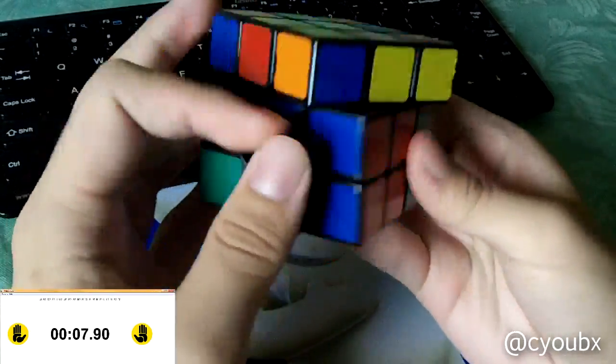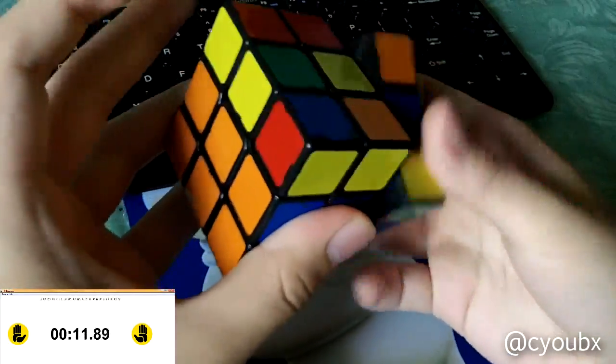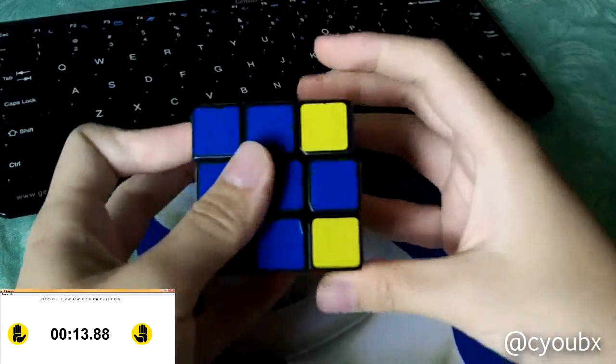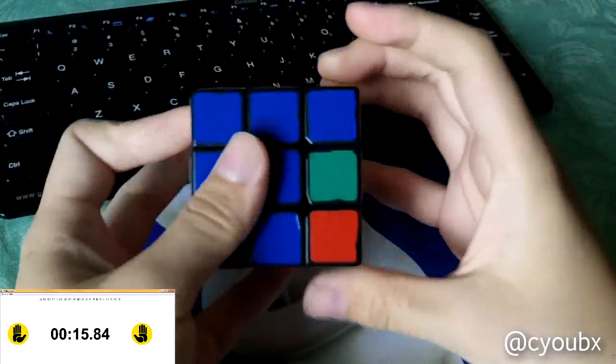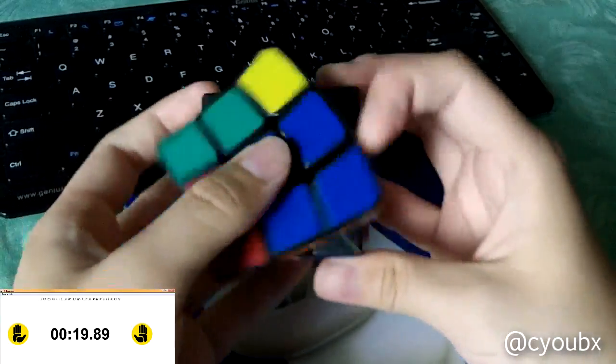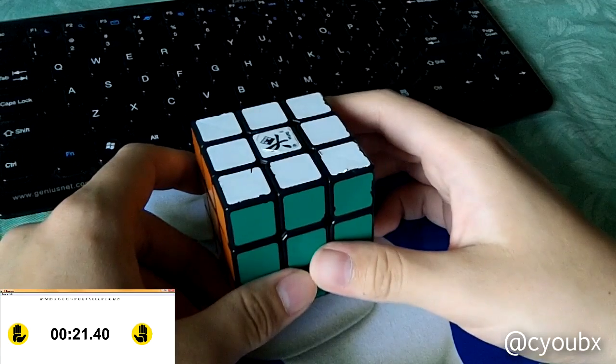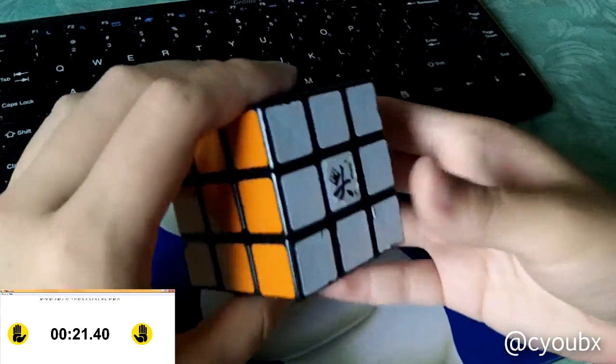One way to make look-ahead easier is to learn what each F2L case, solution, or algorithm does to the other pieces. This way, you'll know what case you have next just by looking at the cube. You won't need to track the pair. Because you can already predict the next case, it makes it possible for you to turn faster since there's nothing to track. I would say this is quite a bit more advanced, so it isn't for everybody.